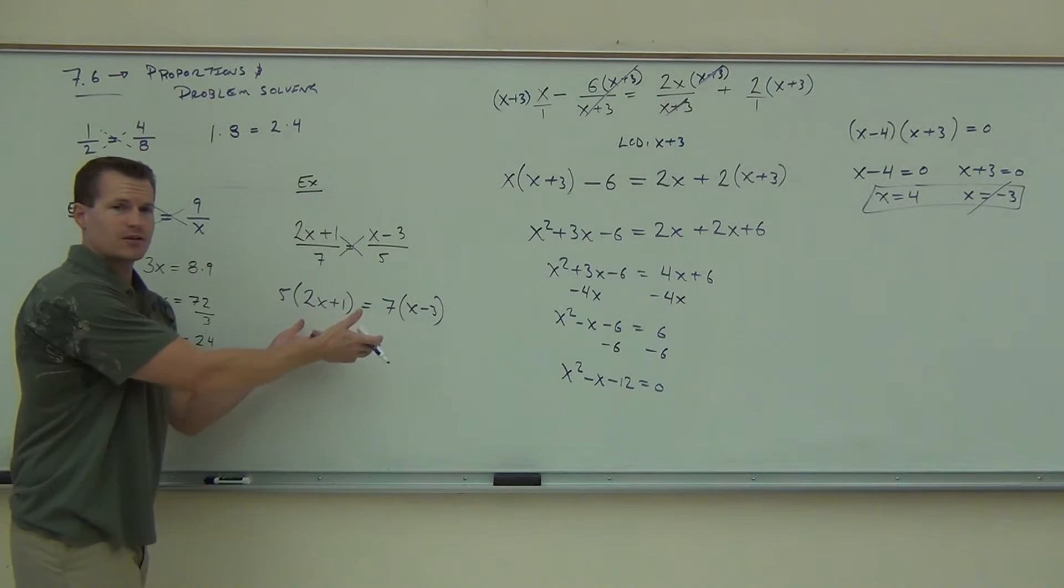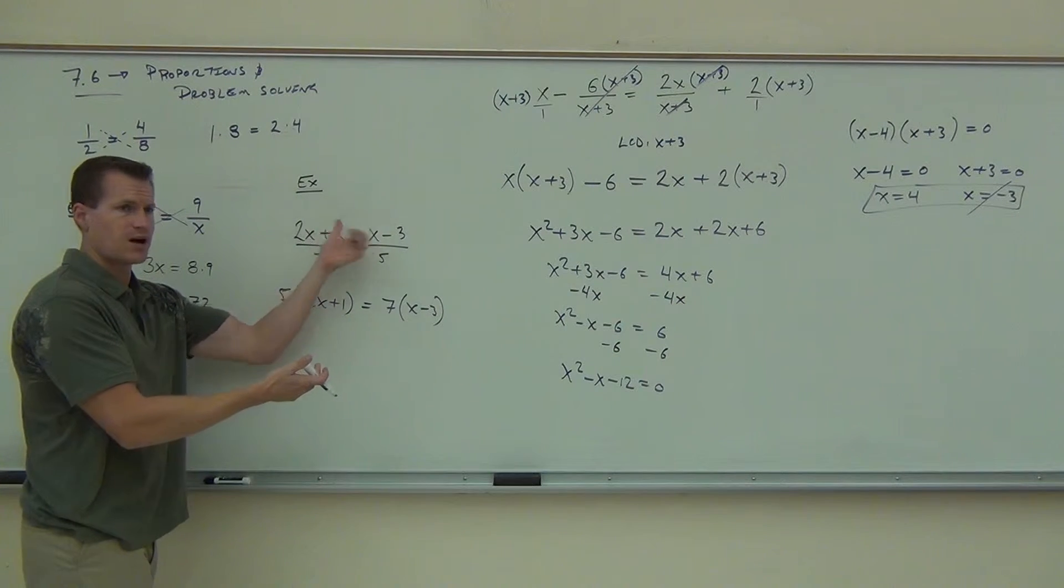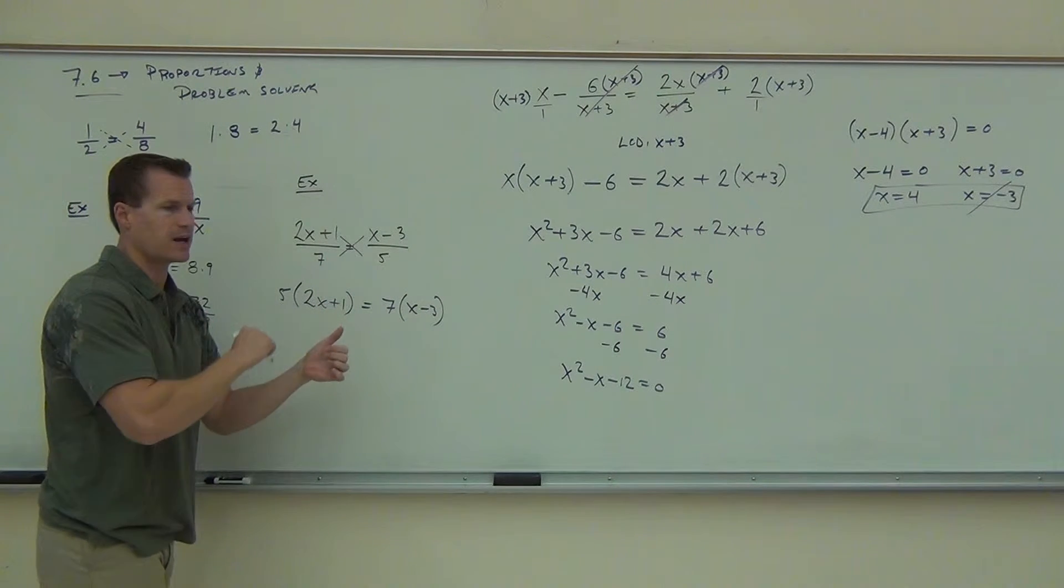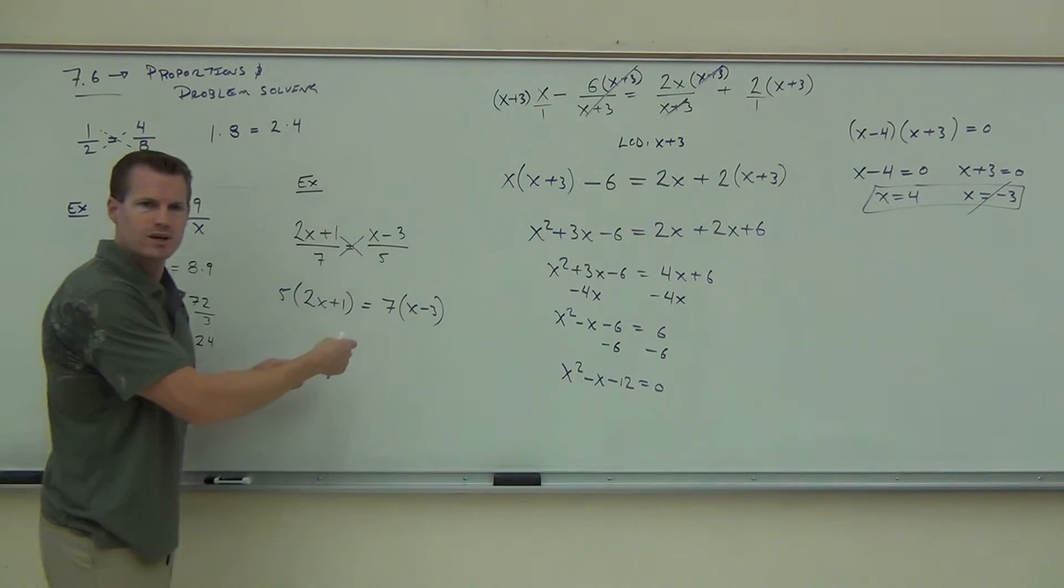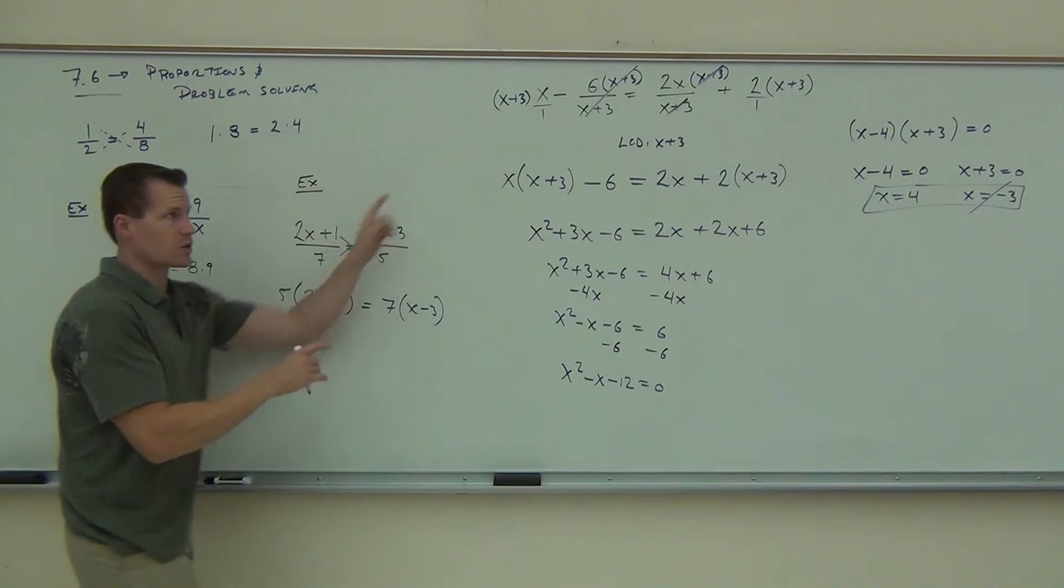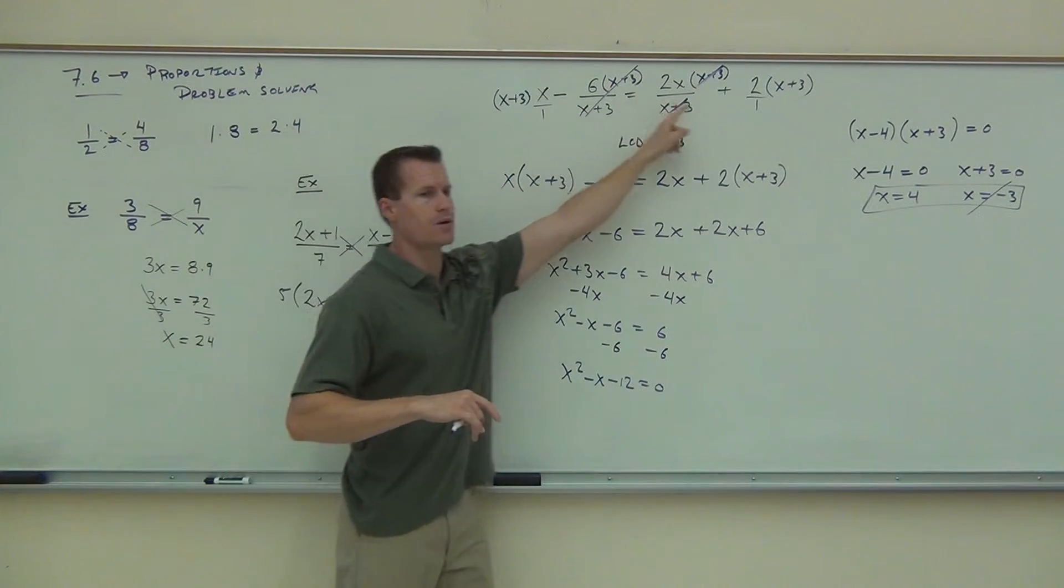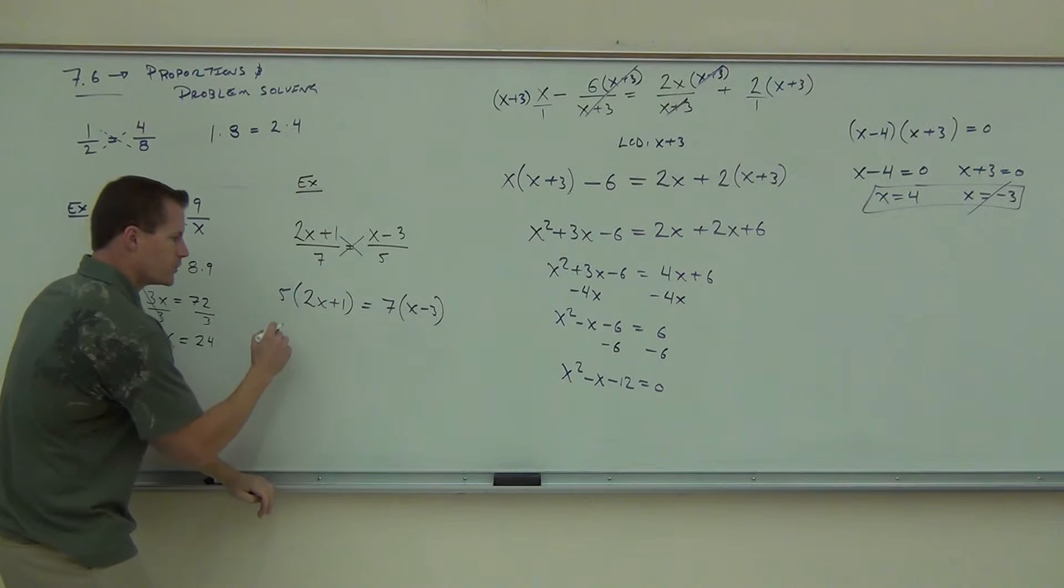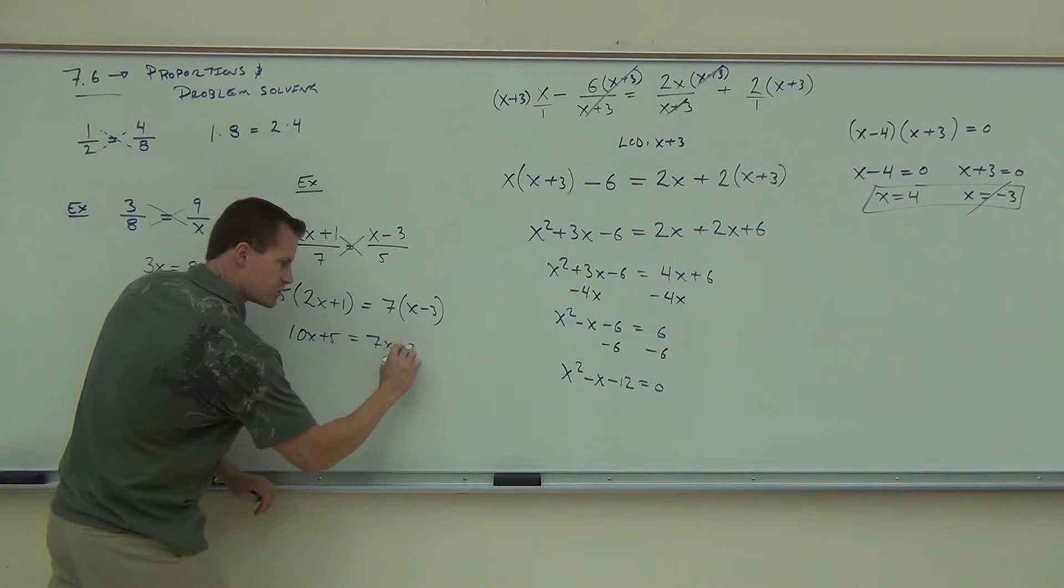But now, look. I mean, we didn't even have to find LCD, did we? You could have done it that way. You could have found 35, multiplied both sides by 35, simplified it, and then distributed it just like you did here. You could have done the same thing. But this makes it a little quicker because you don't even have to think about LCD. Not even if you're with me on that. It's kind of nice, right? Does this work here? You can't cross-multiply because you're forgetting about these things. But here, no problem. We'll distribute. 10x plus 5 equals 7x minus 21.